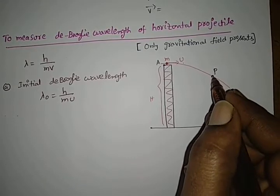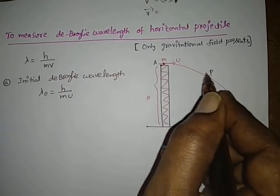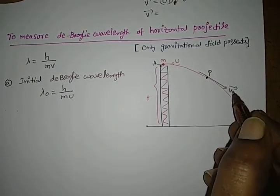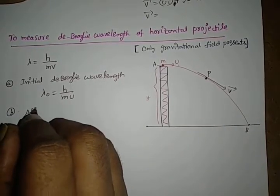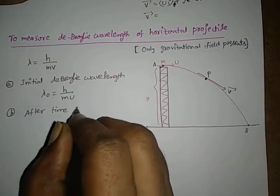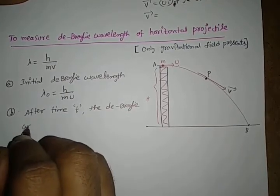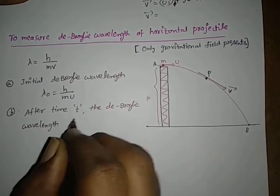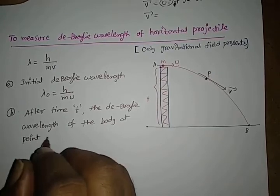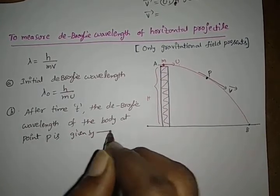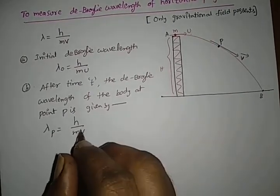After time t, the projectile reaches point P in its path. To measure the direction of velocity here, we draw a tangent — this is the velocity vector of the projectile. The de Broglie wavelength of the body at point P is given by lambda equals h by m v, where v is the velocity after time t.